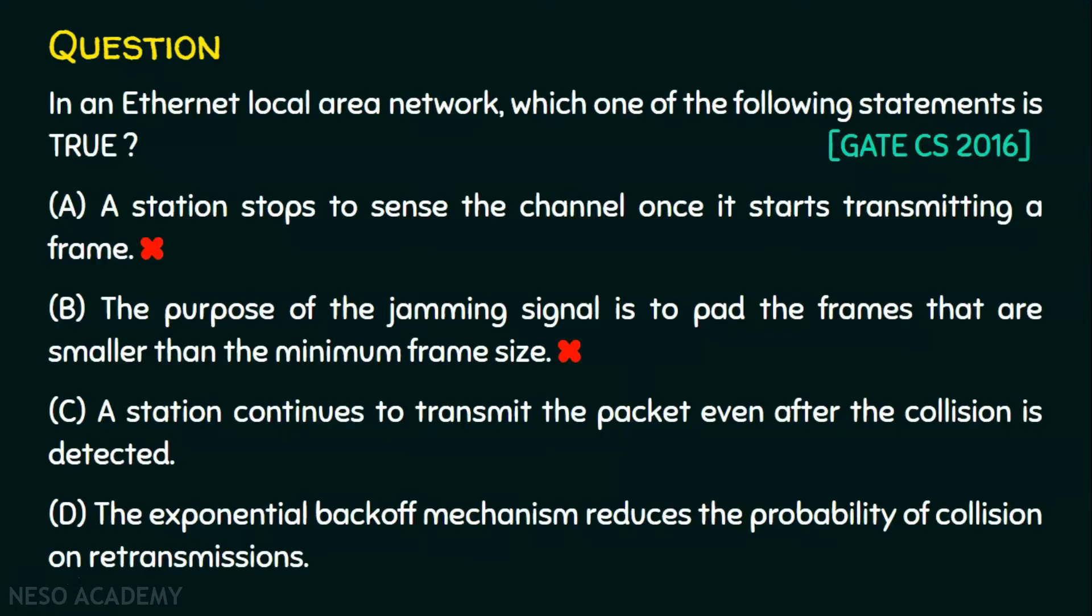Now, let's see option C. A station continues to transmit the packet even after collision is detected. As far as option C is concerned, station sends jamming signal if collision is detected. We know station will not continue transmitting the packet if the collision is detected. A jamming signal is sent in order to notify other stations that a collision has occurred. So, option C is also false.